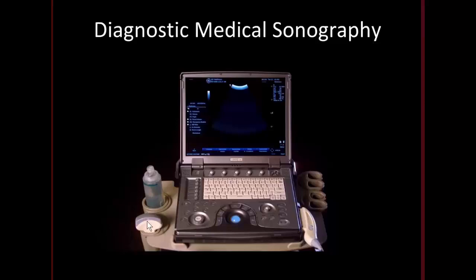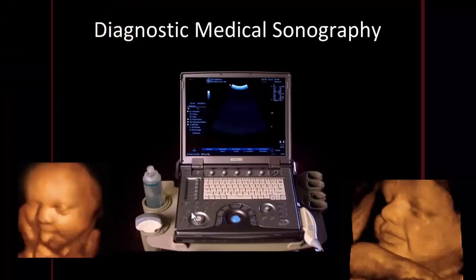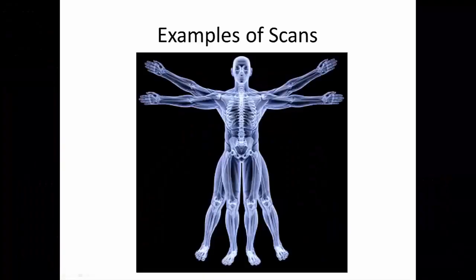It's not only grayscale — modern ultrasound has much more than just grayscale images. You can set it to Color Flow Doppler, where you can actually visualize the direction that fluid is moving in. Some very fancy modern machines will even allow you to do a so-called 4D ultrasound that gives you a three-dimensional appreciation of the underlying tissues and structures.